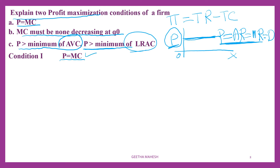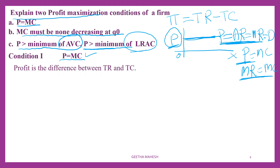The first condition is: price is equal to MC. That means you can write price is equal to MC, or you can write MR is equal to MC. MR is nothing but price. As I told, price is equal to AR, which is equal to MR, which is equal to demand. You should keep that in mind.